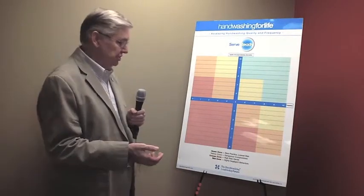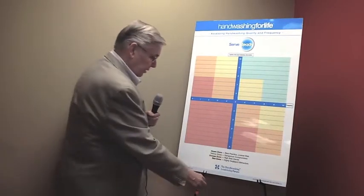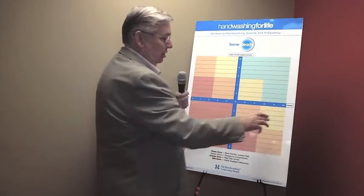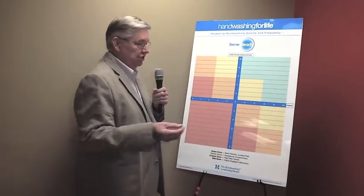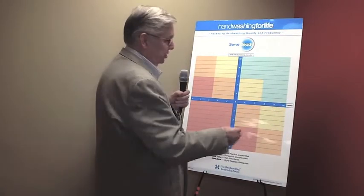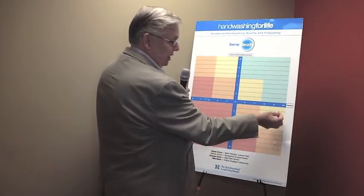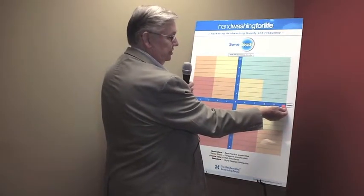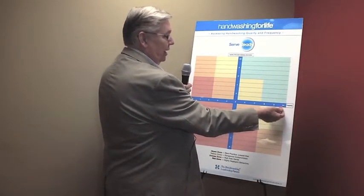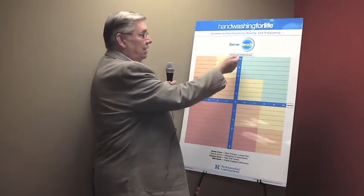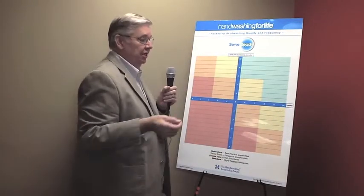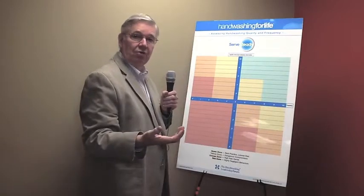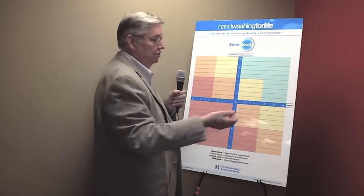Let's take a look. On this axis we have frequency. So let's say somebody's washing their hands absolutely as many times as possible — a frequency of 10. Now we look at the quality of the handwash. Is that person washing long enough to get a really thorough handwash? Are they doing a good job?